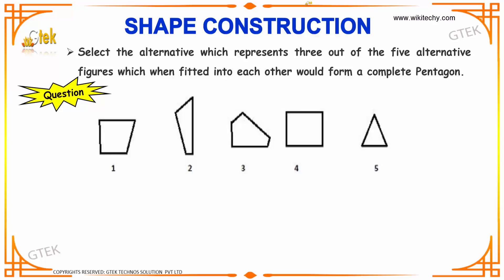Let us move on to our next example. Here, we have to construct a complete pentagon from the given alternatives: 1, 2, 3, 4, and 5.